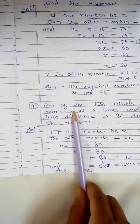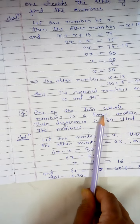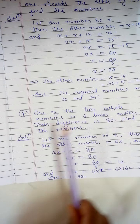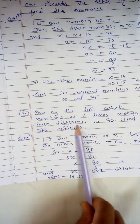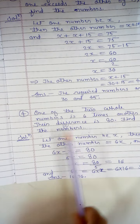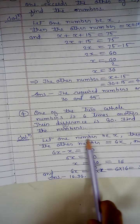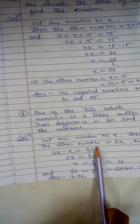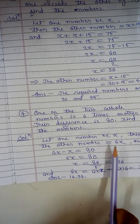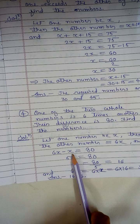The next question: one of the two whole numbers is six times the other, and their difference is 80. Find the numbers. Let one number be x, then the other number will be 6x. So the difference means 6x minus x equal to 80.